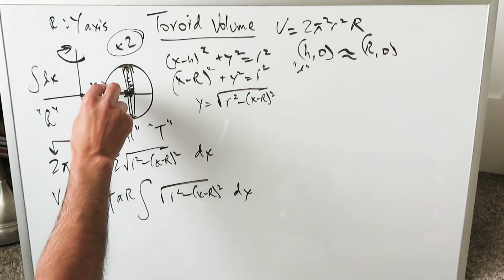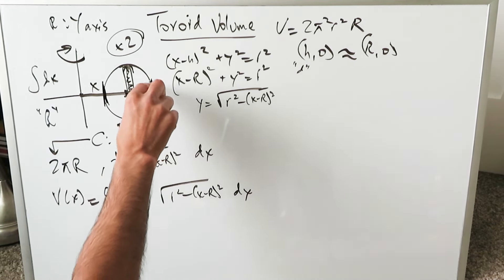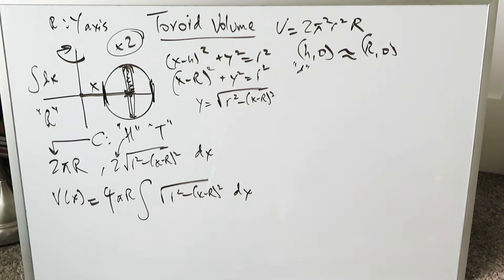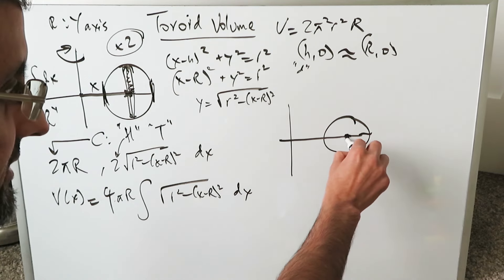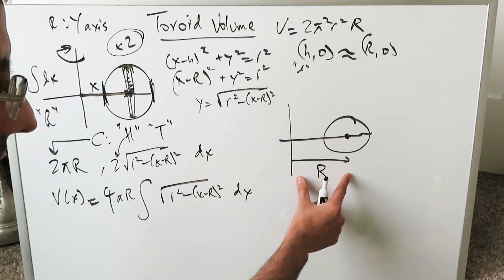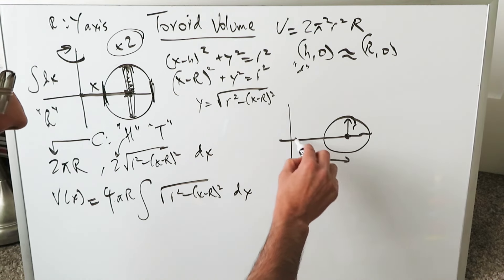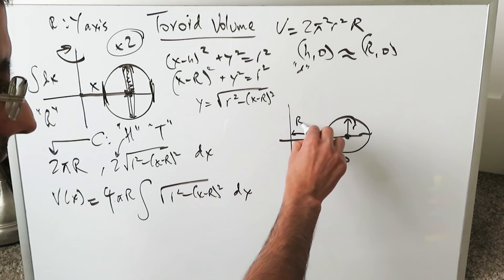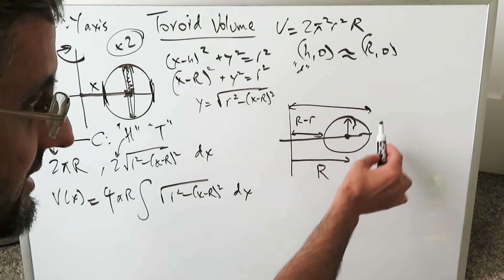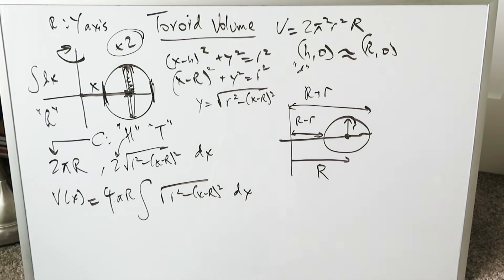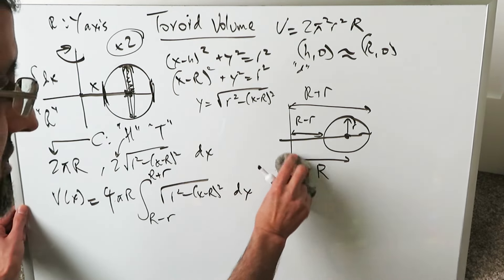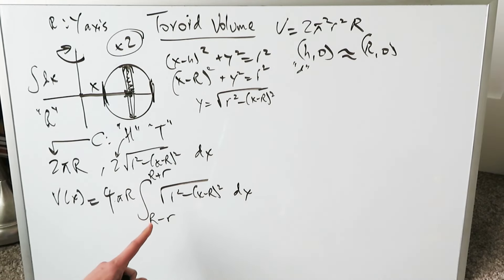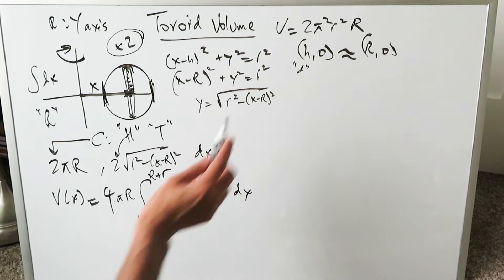What are the limits of integration? Looking at the diagram, the center is R units from the origin, and the circle has inner radius r. From the origin side, the lower x-limit is R − r; at the far tip, the upper x-limit is R + r. So the lower limit is R − r and the upper limit is R + r. This gives the complete integral for the volume of the toroid.